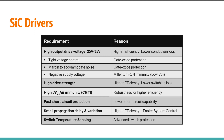The first requirement is for the gate driver to have a high output drive voltage of 25 to 30 volts. Typically, silicon MOSFETs are driven with only 15 to 20 volts, and this extra drive voltage allows the driver to withstand more supply surges and makes it more immune to noise.